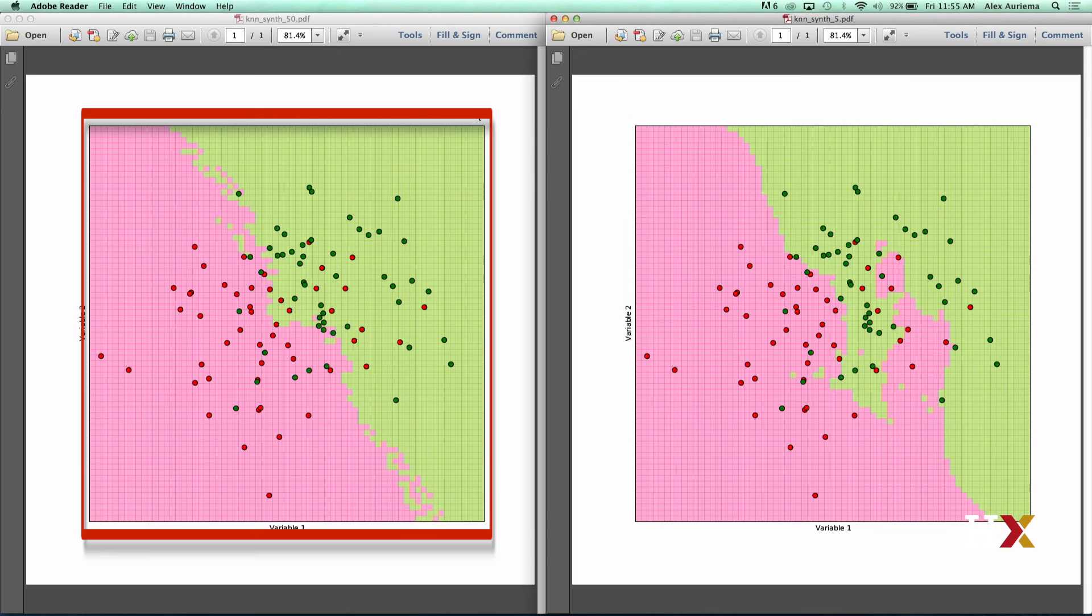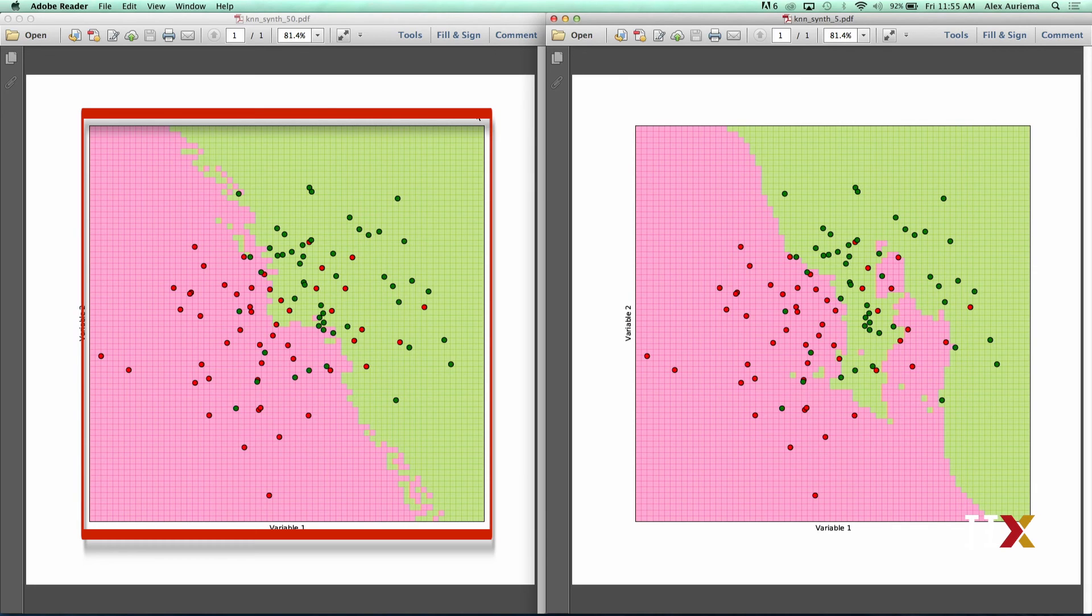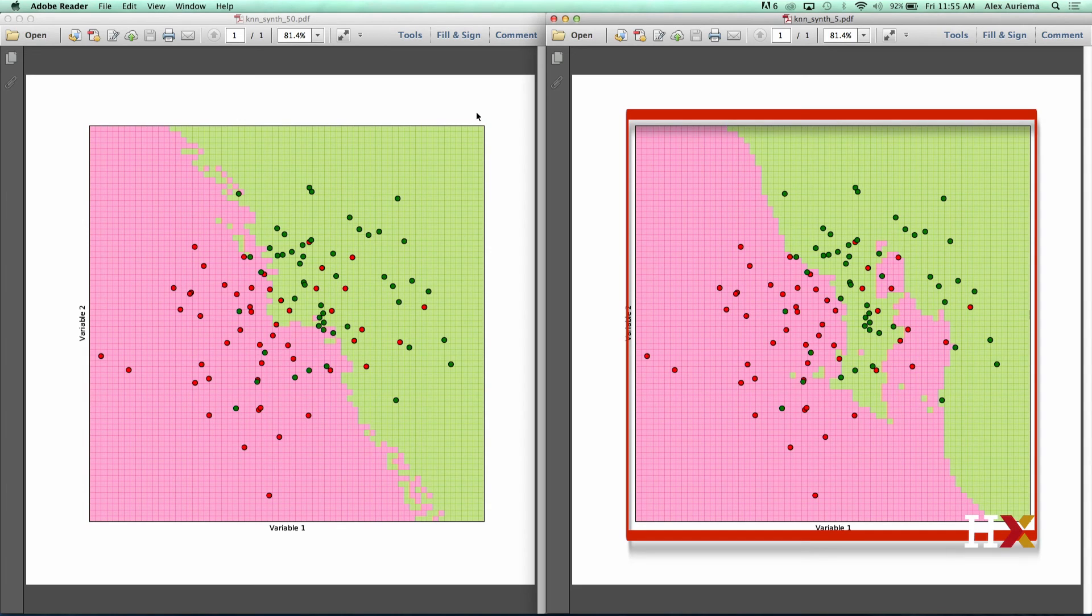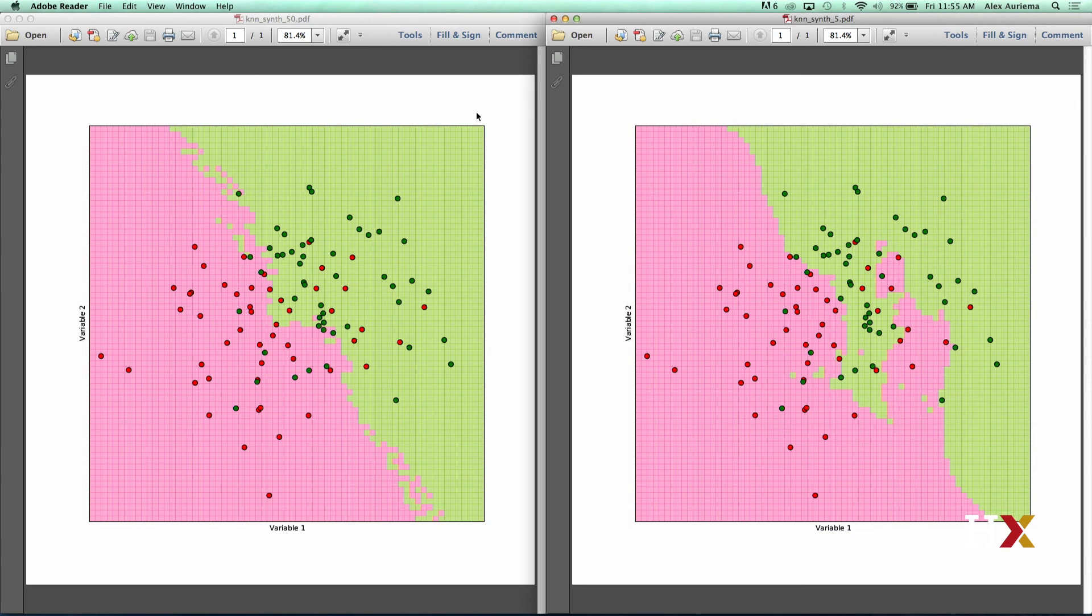Looking at the plot here for k equals 50, we can see that the decision boundary is pretty smooth. In contrast, if you look at the plot on the right where k is equal to 5, you'll see that the shape of the decision boundary is more complicated.